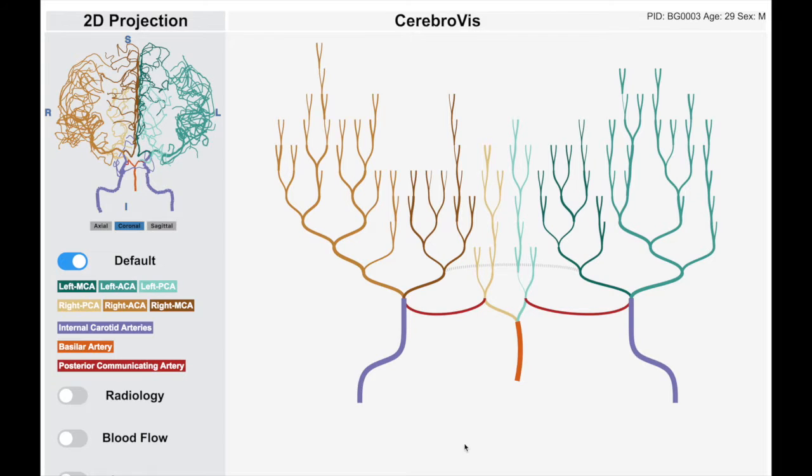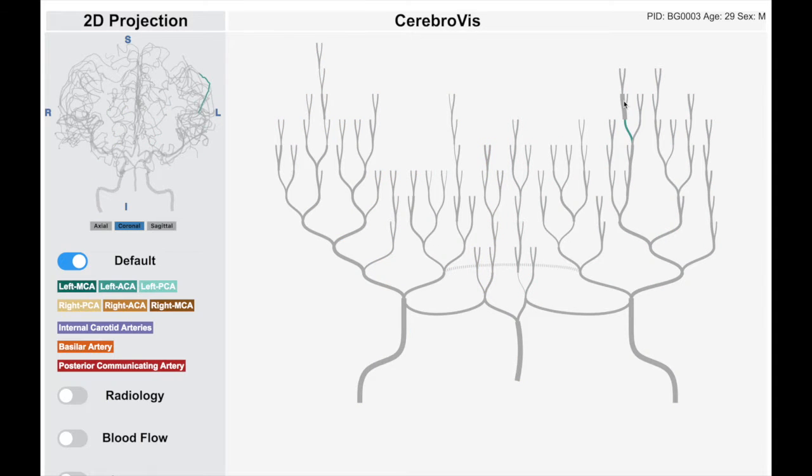We've designed Cerebral Vis to identify cerebrovascular abnormalities. A common abnormality is the narrowing of arteries, called stenosis. Cerebral Vis can support identification of abnormality. Experts can use the linked view to analyze it further in the brain projection.